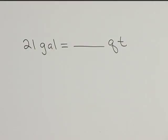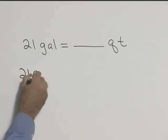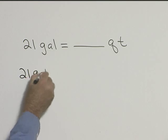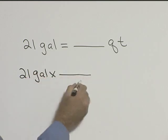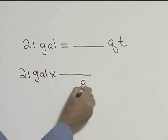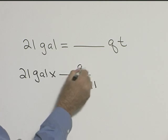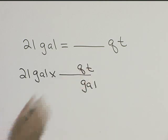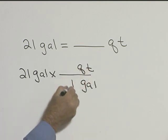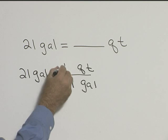For this problem, let's convert 21 gallons to quarts. We start with 21 gallons, and we want to convert gallons to quarts. What we want to get rid of is always in the denominator. So in one gallon, we know we have how many quarts?